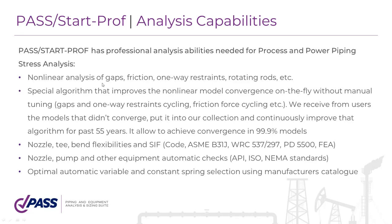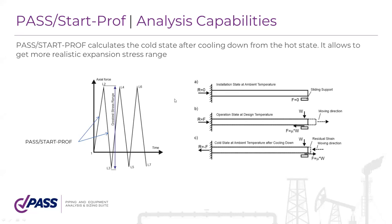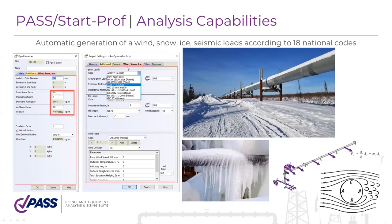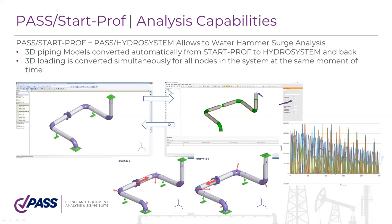StartProf has all needed non-linear abilities to analyze your piping system, including gaps, friction, one-way restraints, rotating rods, and others. StartProf can also calculate the follow-up load case for the cold state of the pipe after cooling down from the operation state, taking into account friction forces and their direction change during cooling. We have a wind, snow, ice, and seismic load generator that generates loads according to 18 national codes. We also have integration with PASS HydroSystem — for example, you can analyze water hammer loads on the piping system and pass them to StartProf.